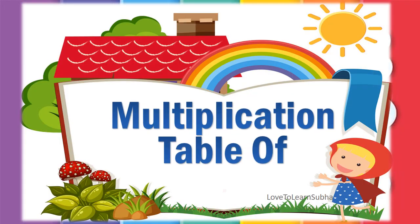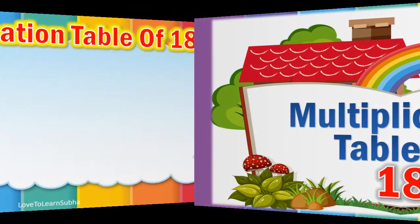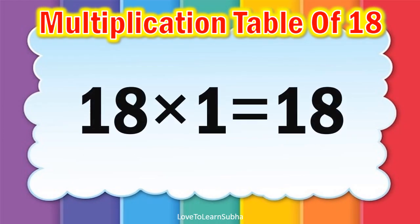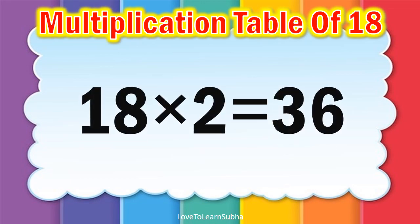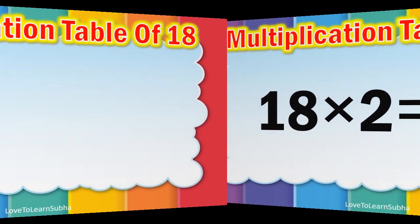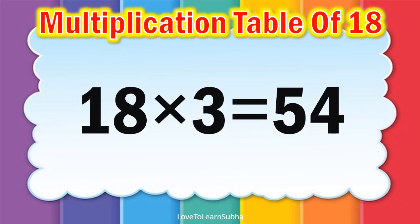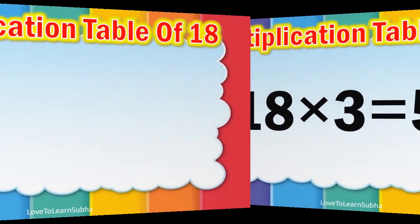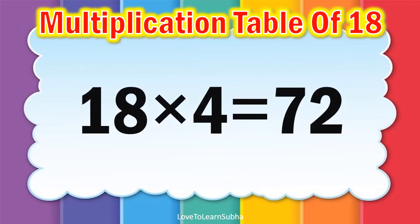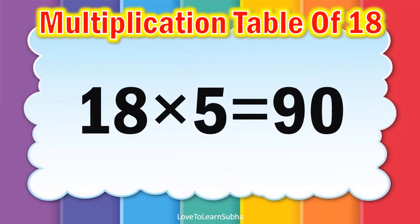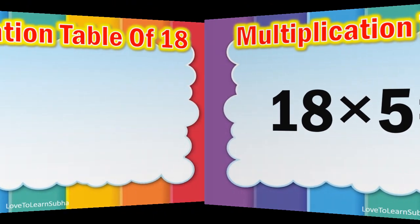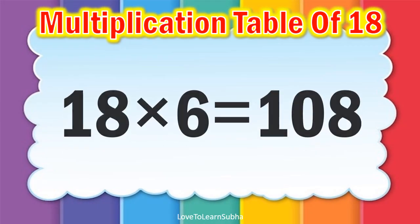Hello kids, today let us learn about the multiplication table of 18. Now let's get started. 18 ones are 18, 18 twos are 36, 18 threes are 54, 18 fours are 72, 18 fives are 90, 18 sixes are 108.